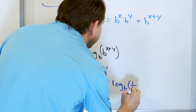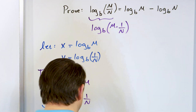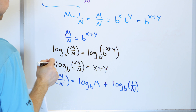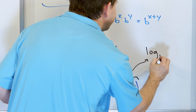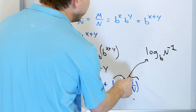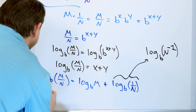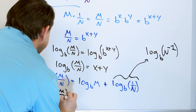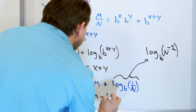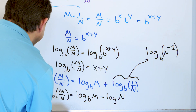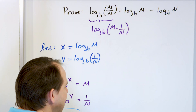Now, 1 over n is the same as n to the minus 1, so log base b of 1 over n equals log base b of n to the minus 1. Using the power rule, that exponent comes out front: it becomes minus 1 times log base b of n, which is negative log base b of n. So log base b of m over n equals log base b of m minus log base b of n — exactly what we set out to prove.